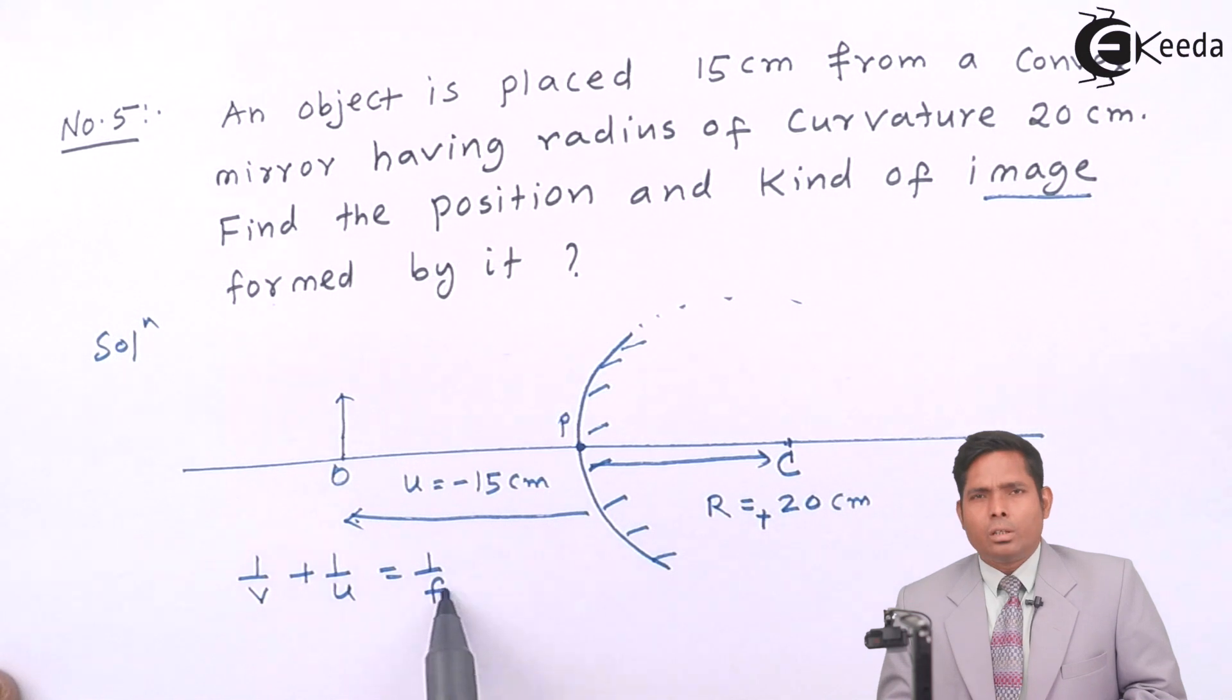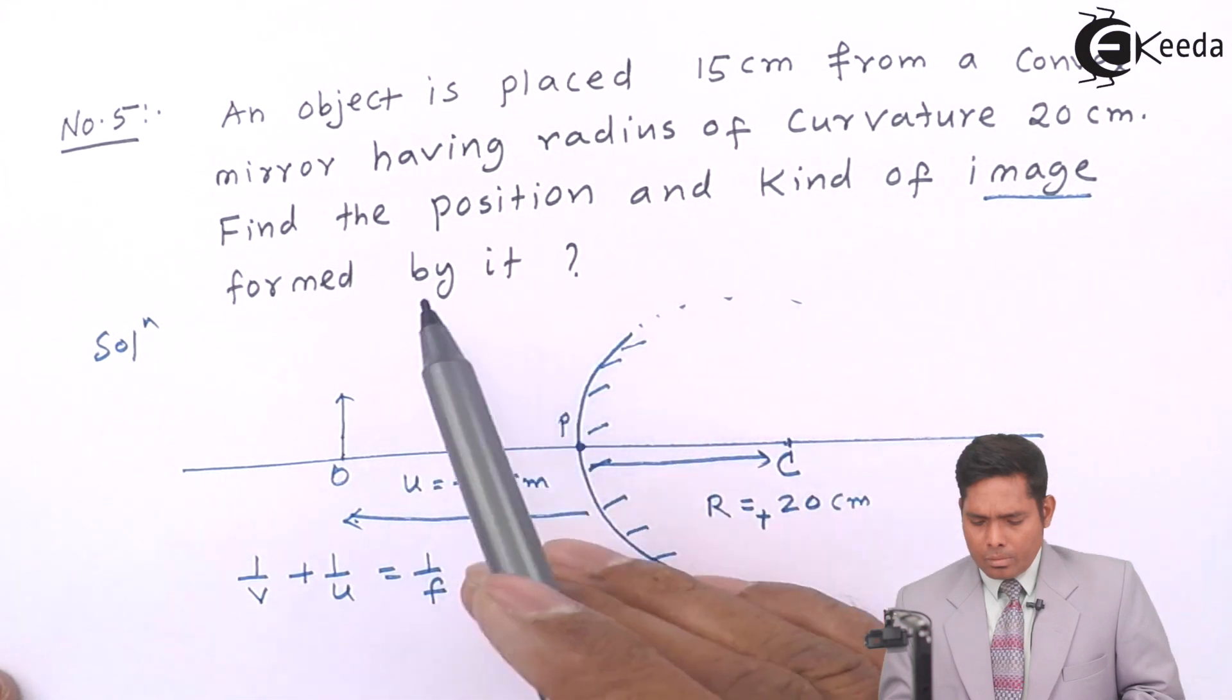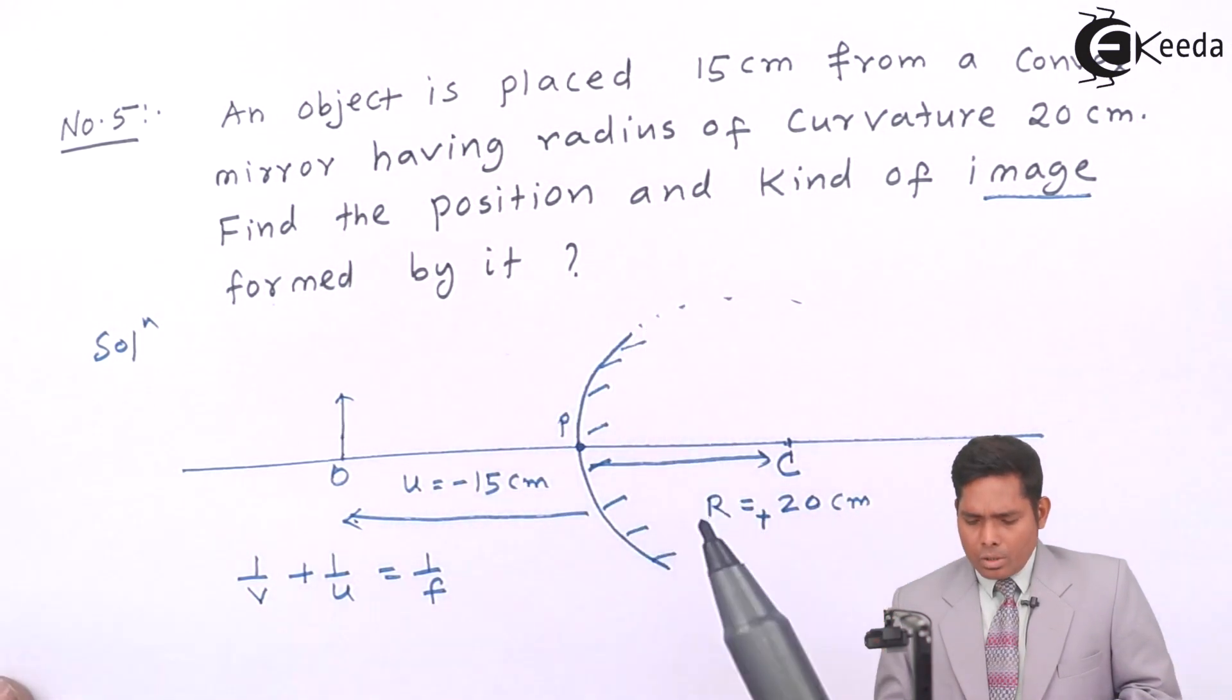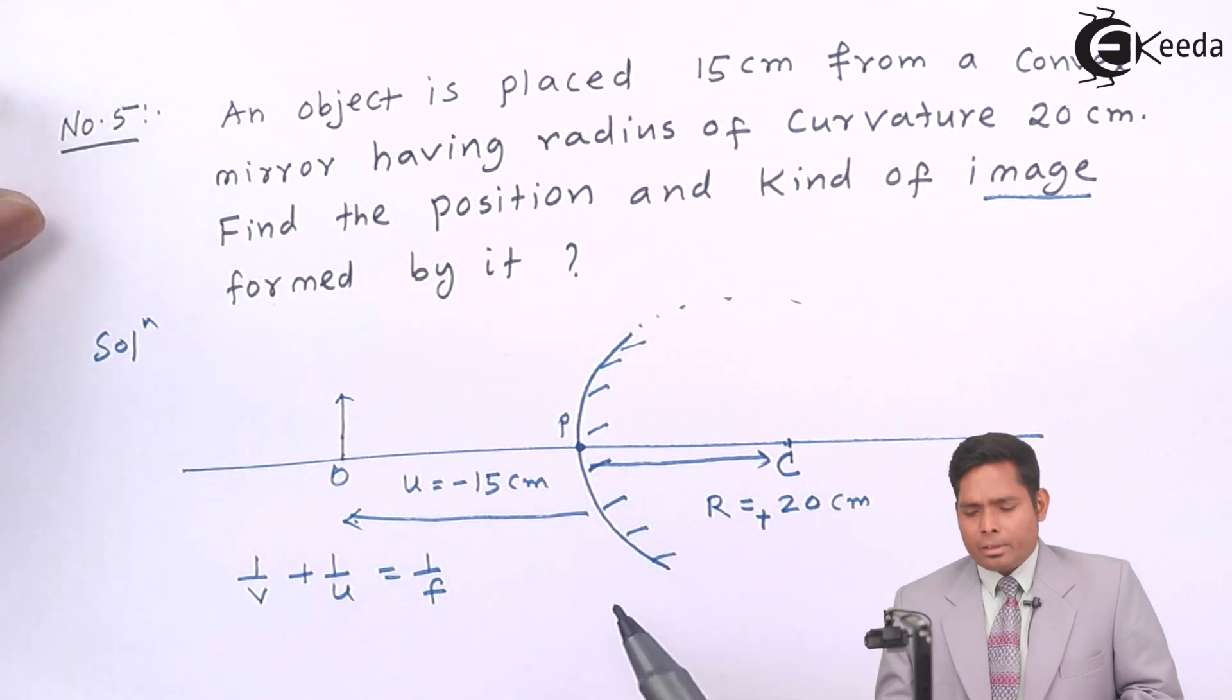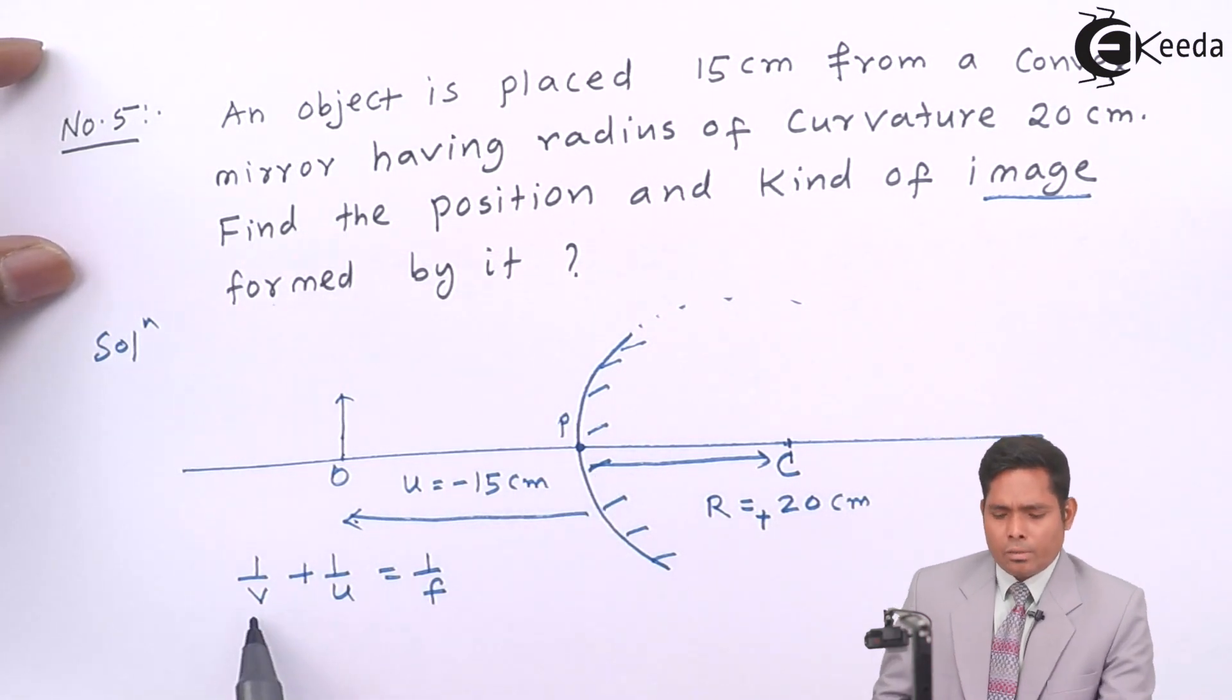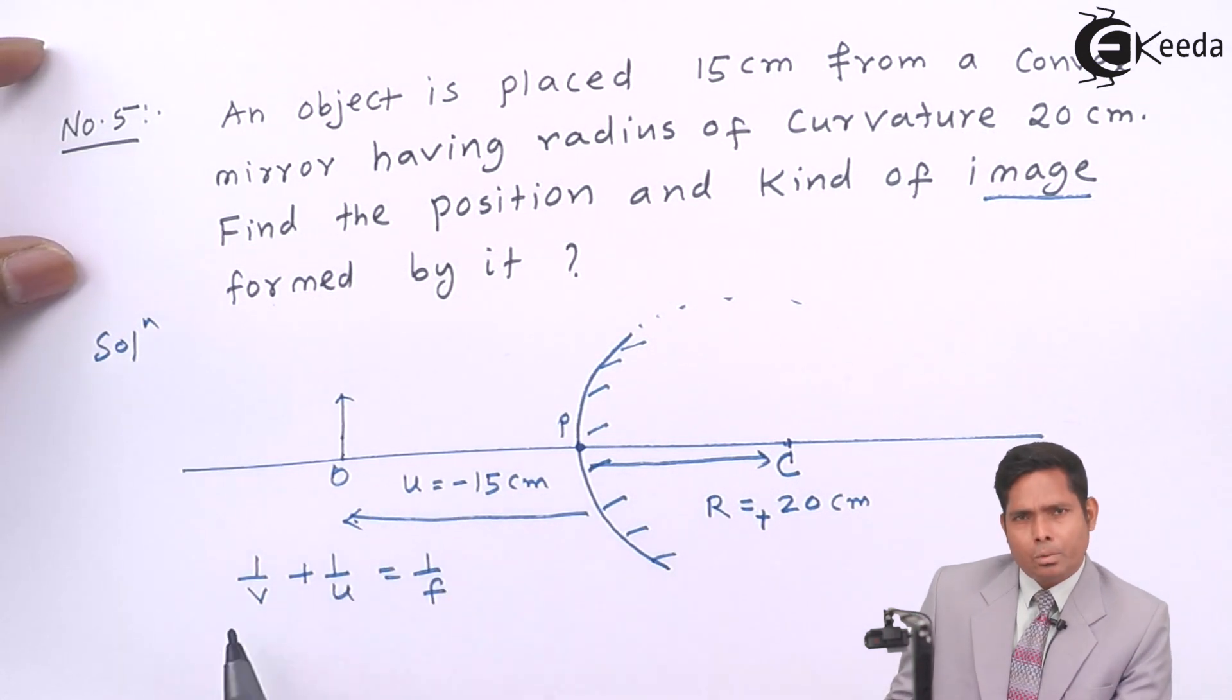Let us use the mirror formula, that is 1/v + 1/u = 1/f. Now, you have to keep in mind that the quantity you have to find should not be given any sign, plus or minus. The result gives the sign of that quantity automatically.